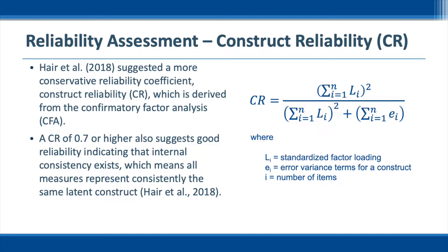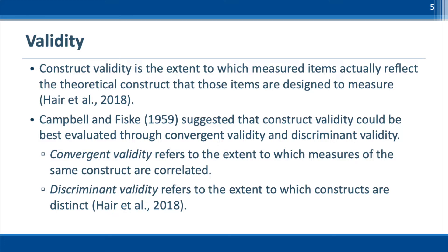Cronbach's alpha can be calculated using SPSS, and construct reliability can be derived and calculated from the confirmatory factor analysis using AMOS, which will be covered in DAV 724. The next step is to evaluate the construct validity. Construct validity is the extent to which measured items actually reflect the theoretical constructs that those items are designed to measure. Campbell and Fisker suggest that construct validity could be best evaluated through convergent validity and discriminant validity, which are two popular validity assessments used in most research studies.